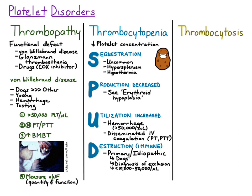There are also secondary causes of immune-mediated platelet destruction, which are commonly infectious. One infection you've already learned about is rickettsial disease — ehrlichiosis and anaplasmosis. To diagnose these, you would look for morulae within the white blood cells, or send out for arthropod-borne disease titers. There are also some drugs that can induce immune-mediated platelet destruction.